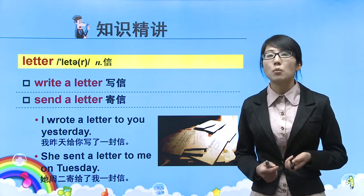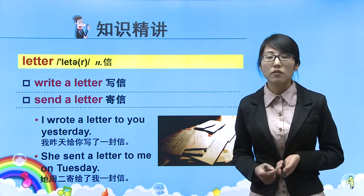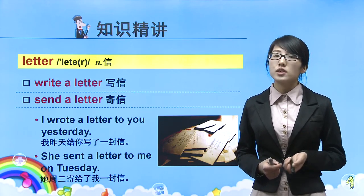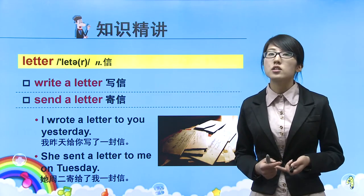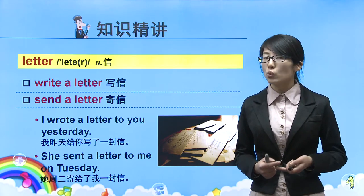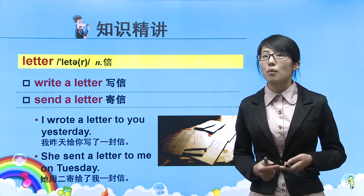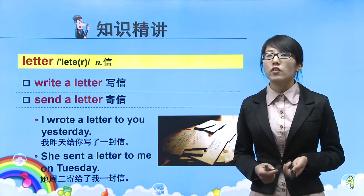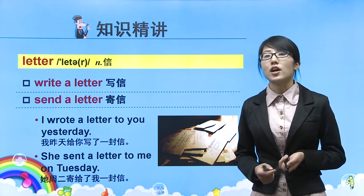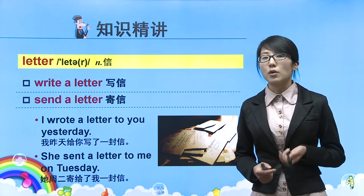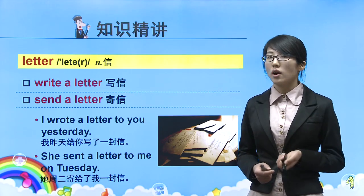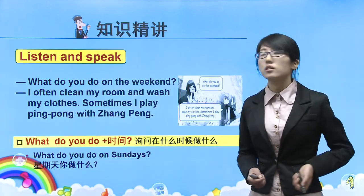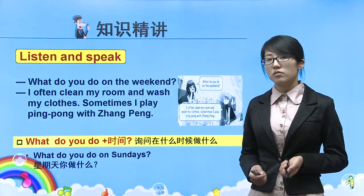时间介词总结：在早上、下午、晚上用in——in the morning, in the afternoon, in the evening；在某一年、某个月、某个季节用in，例如in summer, in April。在具体某一天（包括星期几）用on。Now let's see the dialogue part. 现在我们看一下对话部分。